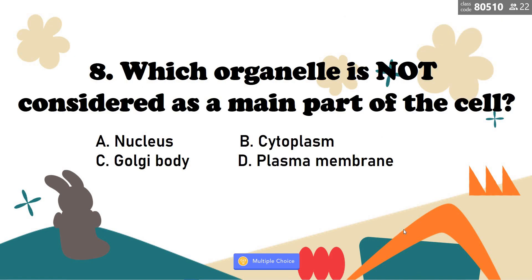Number 8: Which organelle is not considered as a main part of the cell? A, nucleus; B, cytoplasm; C, Golgi body; D, plasma membrane. Very good — it is letter C, Golgi body.